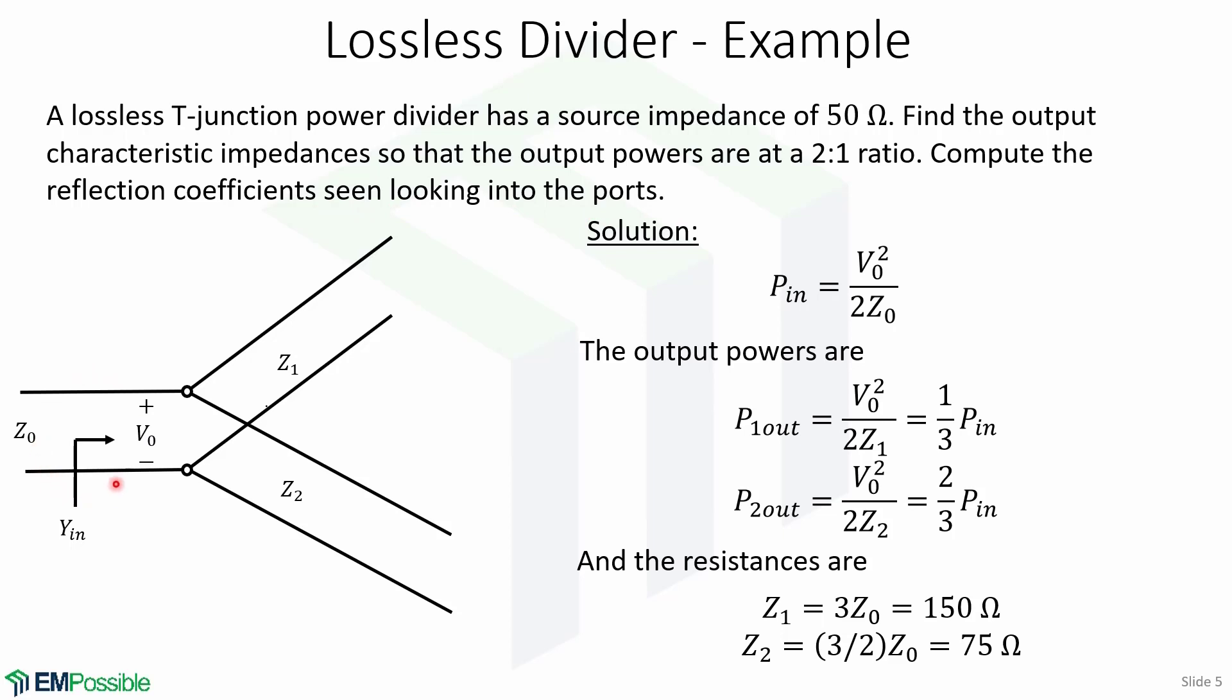The voltage at the junction is V0. Therefore, the input power to the matched divider is given by this expression, V0 squared over 2Z0.